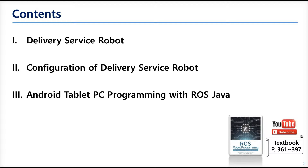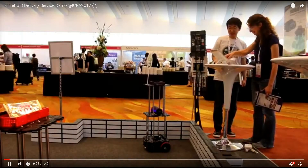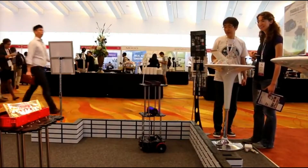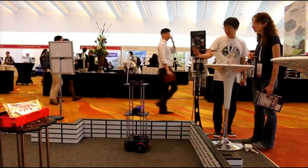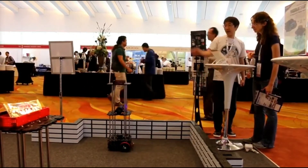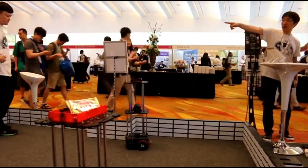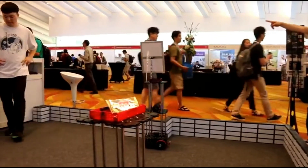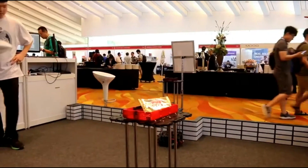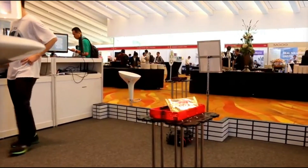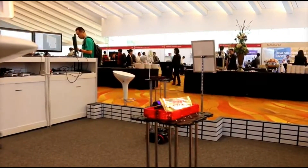We already know that ROS can be used in Android. So here we will think about the way how to order with an Android tablet PC. This video shows the service robot demonstration. There are Android tablet PCs on the tables, and the robot moves now because the customer ordered something. There are three choosable snacks on the other side, and each snack was provided in a designated location.